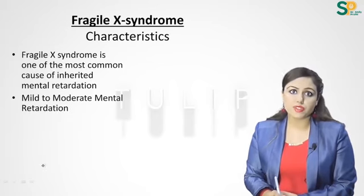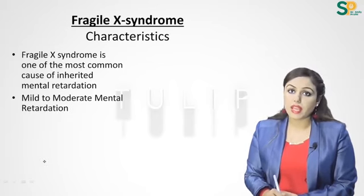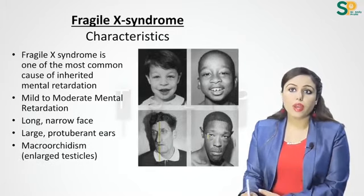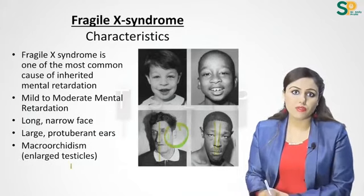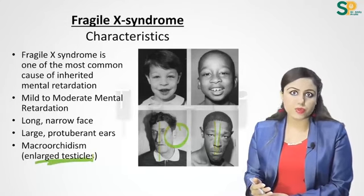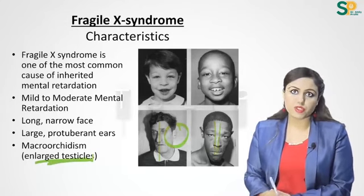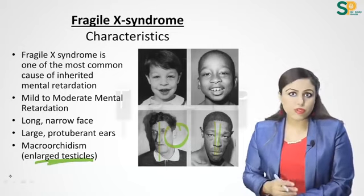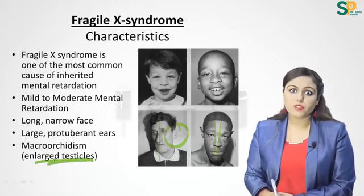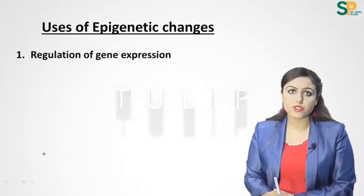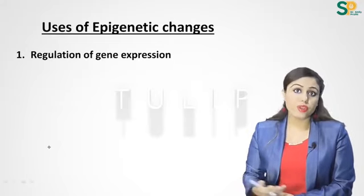Fragile X syndrome is one of the most common causes of inherited mental retardation. Characteristics include mild to moderate mental retardation, long and narrow face, large ears, and enlarged testicles (macro-orchidism).